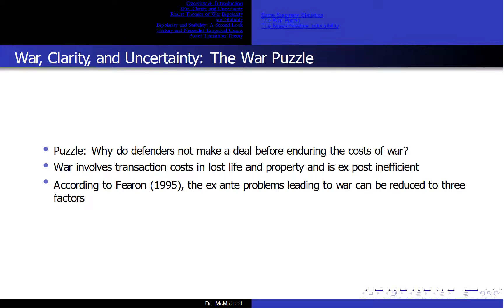So the puzzle is: why do defenders not make a deal before and during the costs of war? War involves transaction costs in lost life and property, and is ex-post inefficient. Costs could be avoided if the adversaries could find an ex-ante negotiated agreement. According to Fearon 1995, the ex-ante problems leading to war can be reduced to three factors.